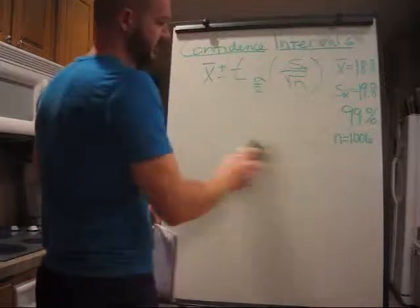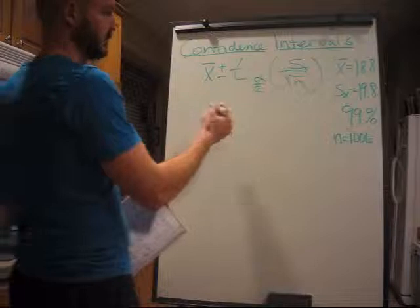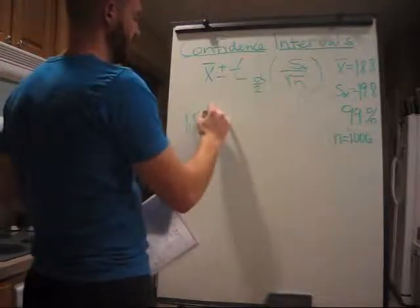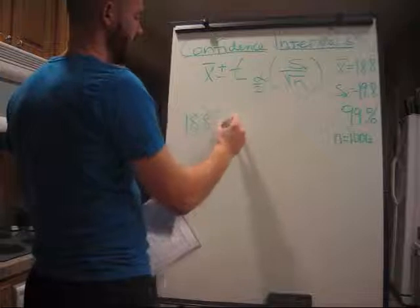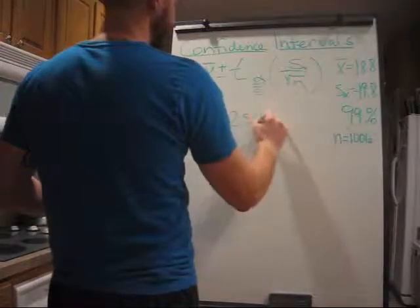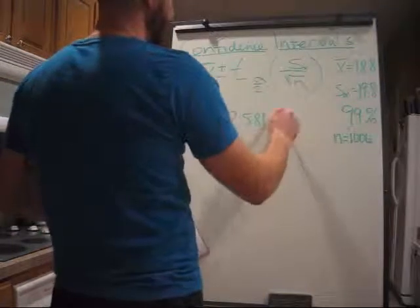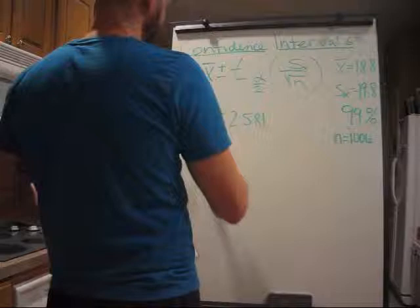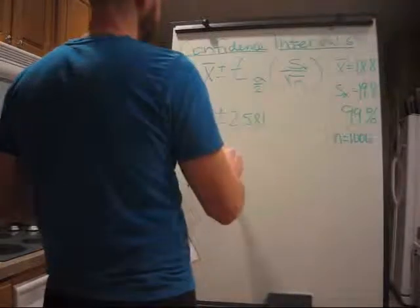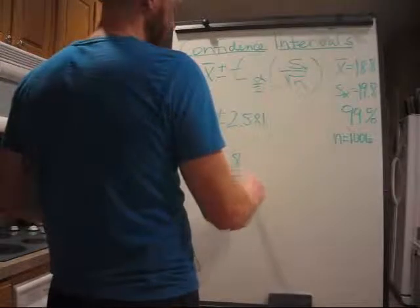And again, t is a symmetrical curve, so we have x-bar is 18.8, plus or minus 2.581, which is your t-score alpha over 2. And you want to multiply that by s-sub-x, 19.8, over the square root of 1,006.